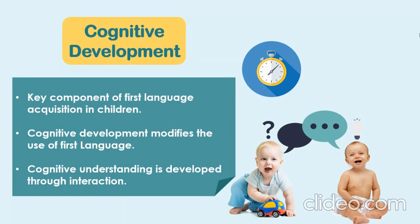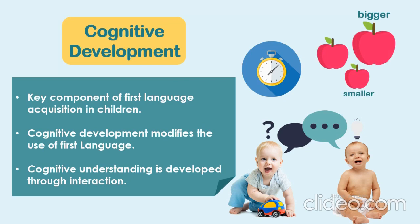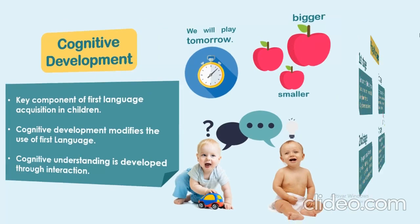Piaget realized that the understanding of certain concepts influences how children use language. For example, when kids use words such as 'bigger' or 'more', they are aware of terms like size or quantity. Those two concepts are simple and children master them in their first years. However, time is a more complex and abstract term which requires a higher cognitive development in children. For that reason, in the early stages children develop their cognitive understanding through interaction with things that can be observed or manipulated.